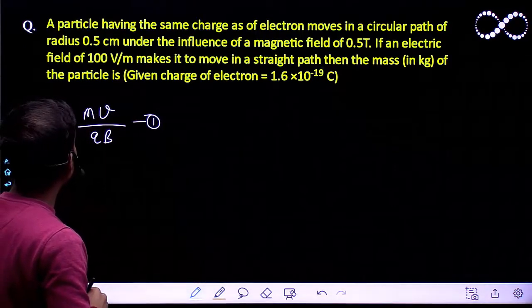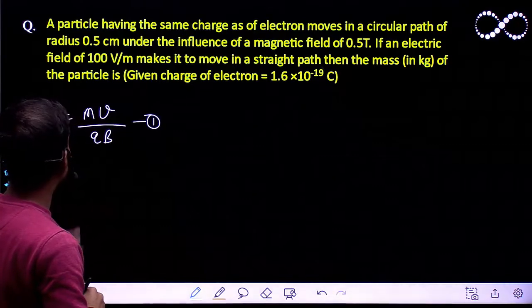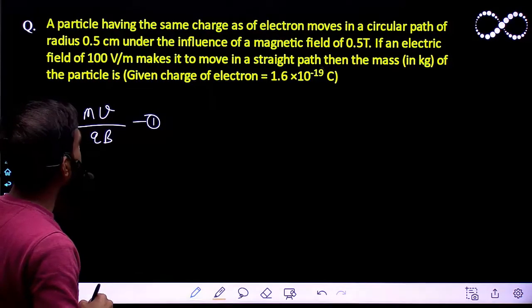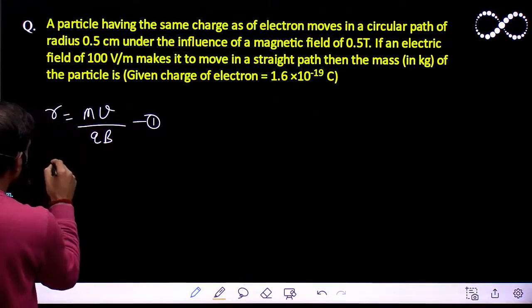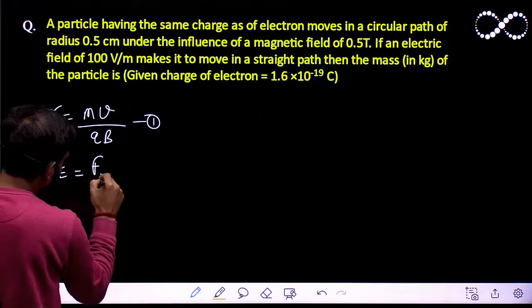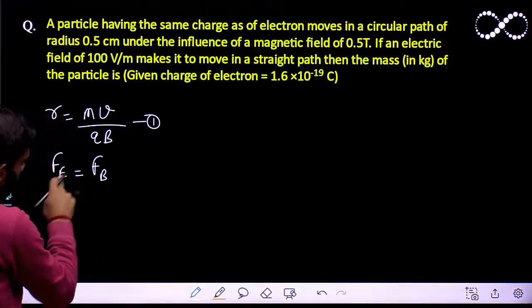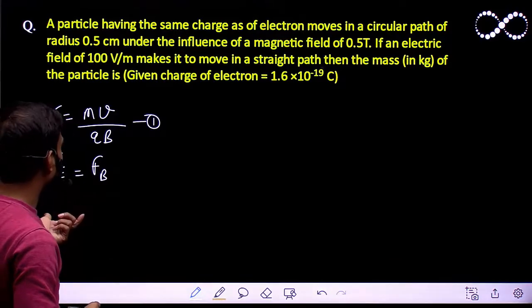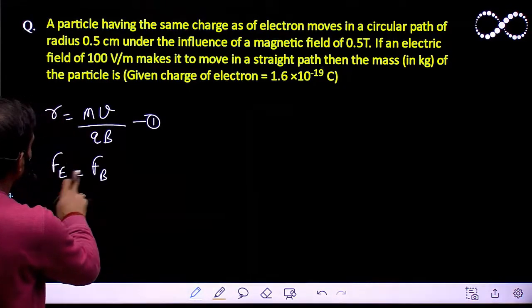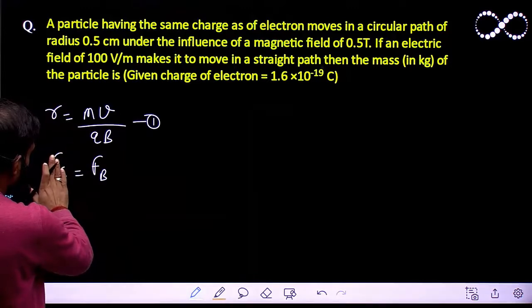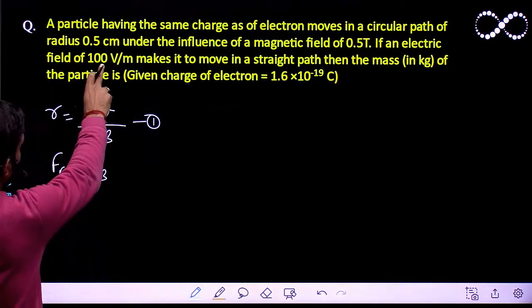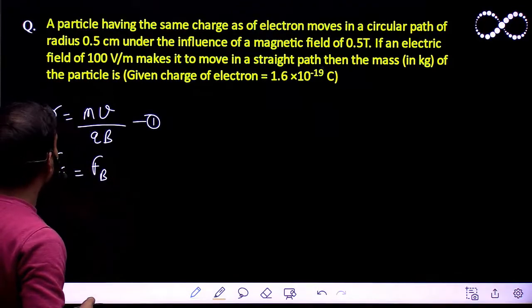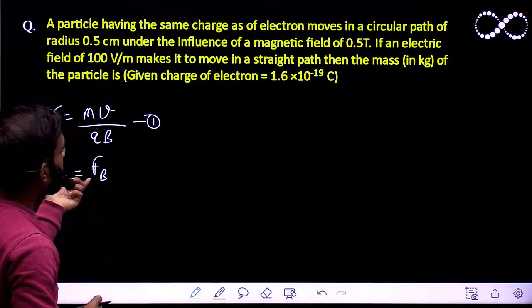Now, if an electric field of 100 volt per meter is applied, it makes the particle move in a straight line. If it is moving in a straight line, this means the force due to the electric field must be equal to the force due to the magnetic field. Both forces cancel each other out, and the particle moves in a straight line. This is achieved at an electric field of 100 volt per meter.